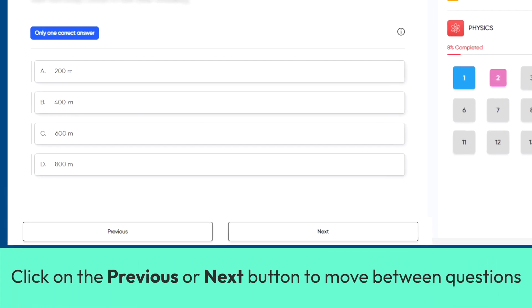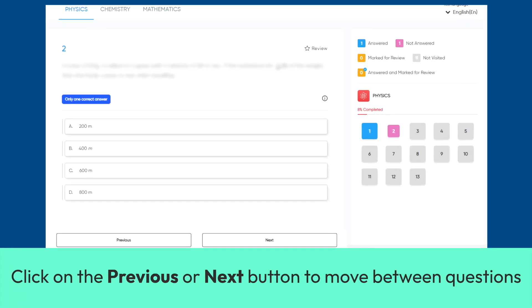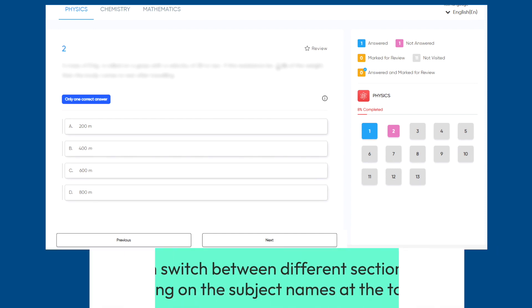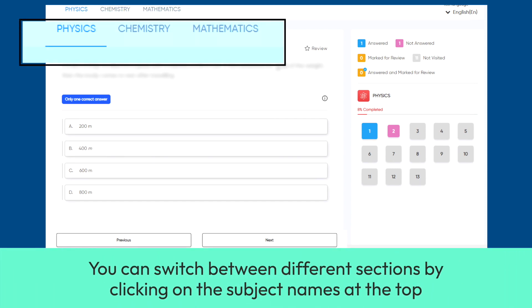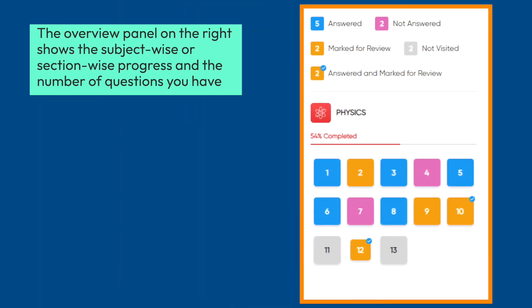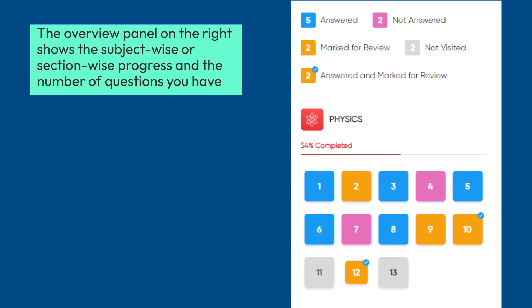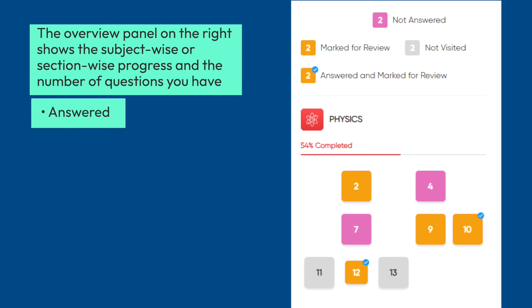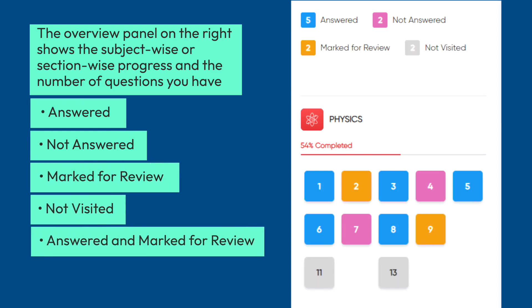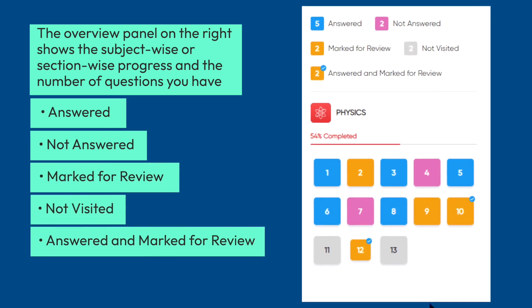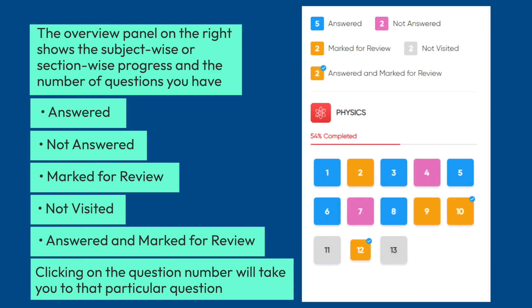Click on the Previous or Next button to move between questions. You can switch between different sections by clicking on the subject names at the top. The Overview panel on the right shows the subject-wise progress and the number of questions you have answered, not answered, marked for review, not visited, and answered and marked for review. Clicking on the question number will take you to that particular question.